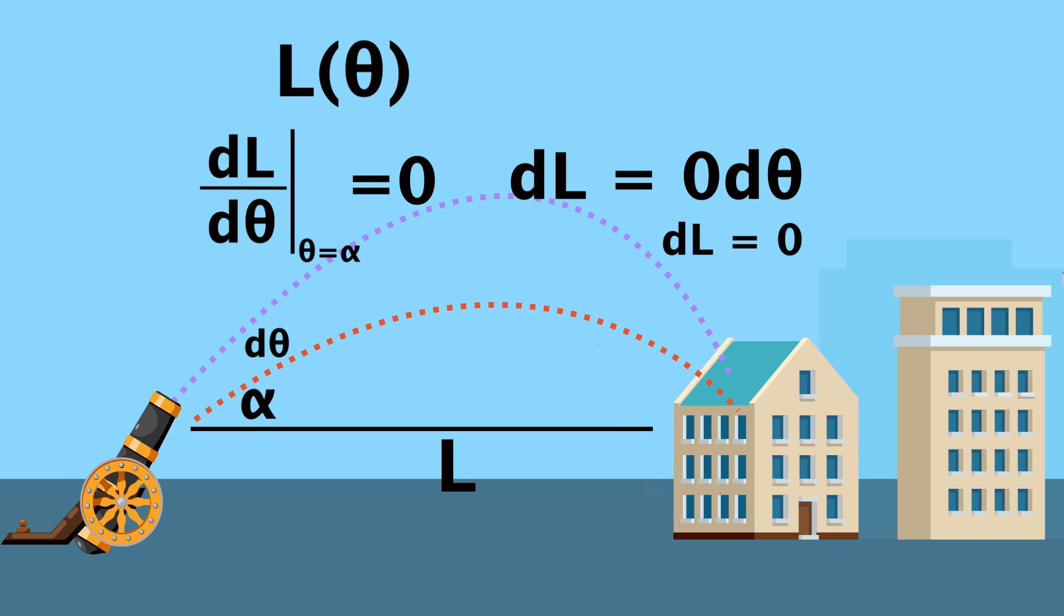This relates to error of propagation for you Calc 1 students, but overall we can afford some human error in the angle of the cannon, while maintaining an accurate shot.